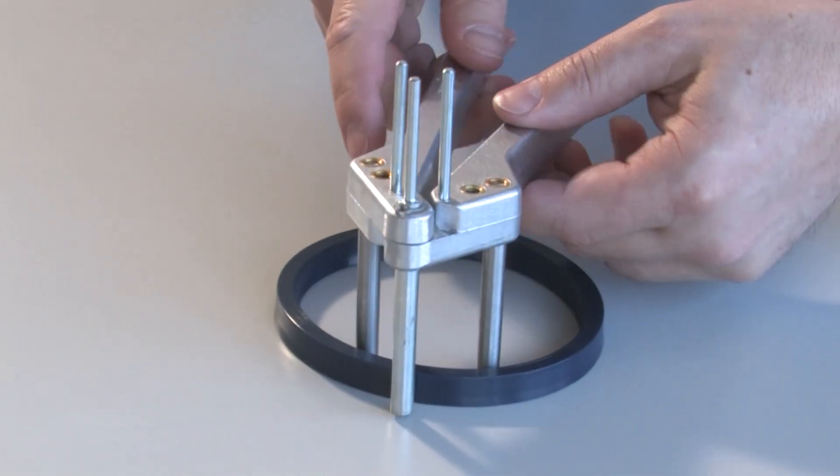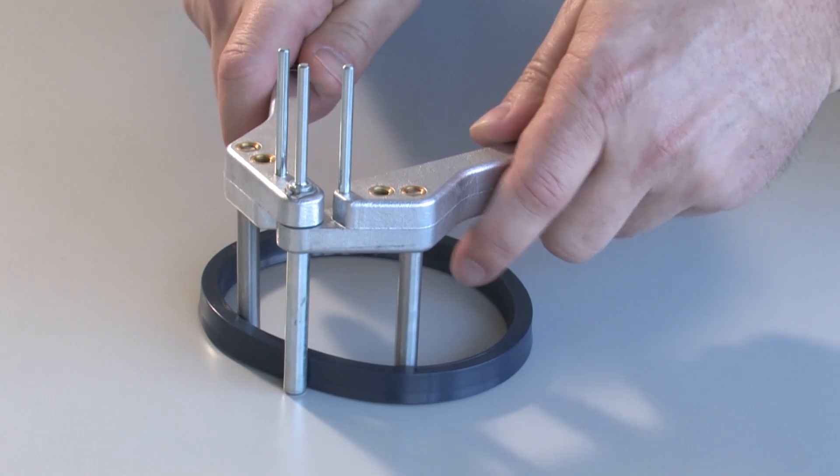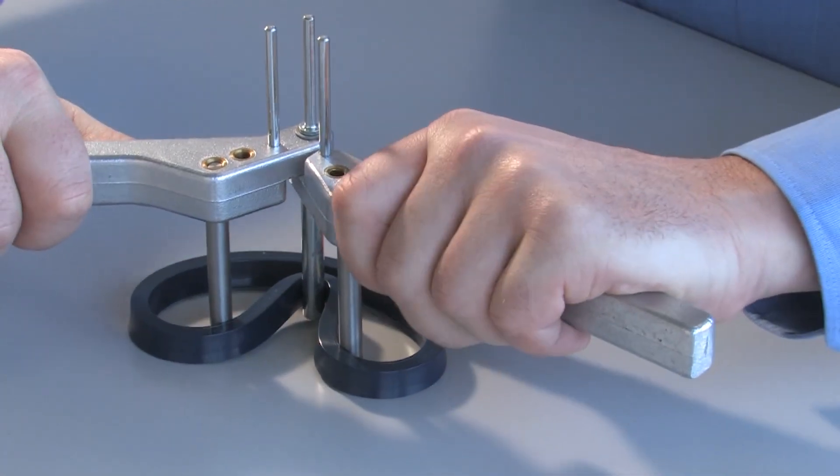Place the two pliers pins, which are close to the handles, inside the seal, with a single pin at the joint remaining outside the ring.